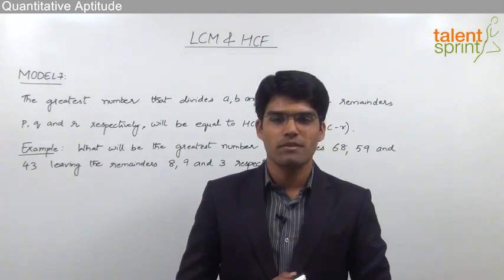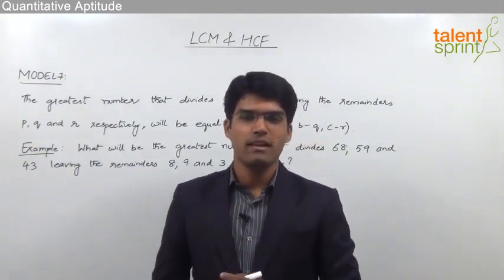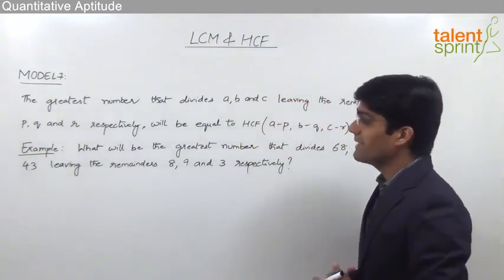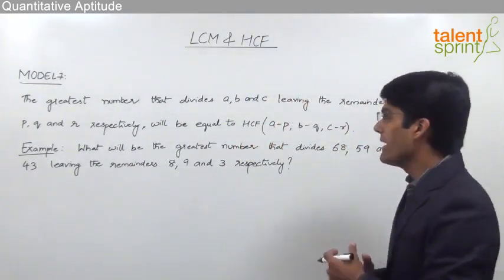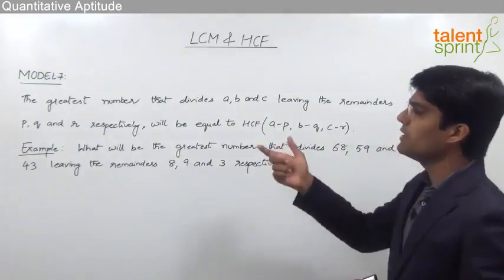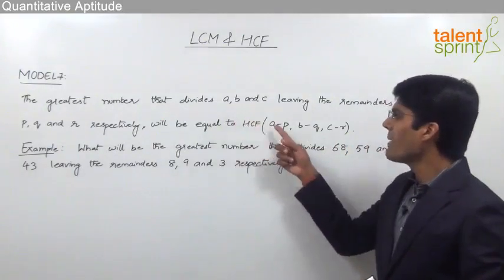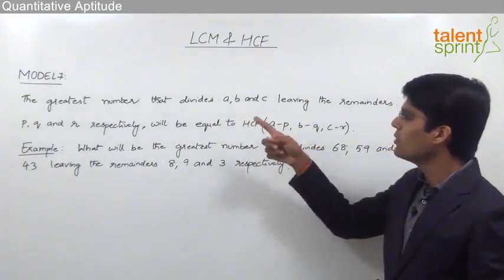Let us now discuss the seventh model from this topic, which is again based on the concept of highest common factor. The point to be understood here is the greatest number that divides a, b, and c leaving the remainders p, q, and r respectively will be equal to the HCF of a minus p, b minus q, and c minus r.